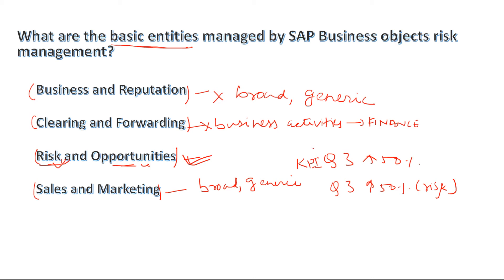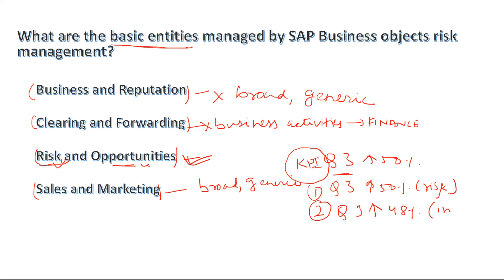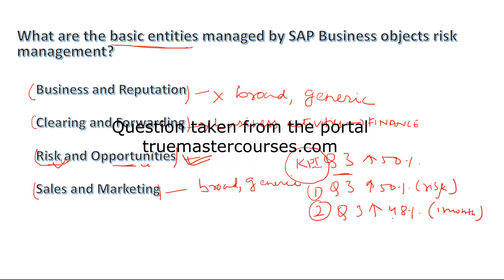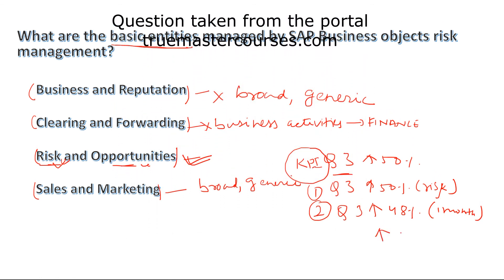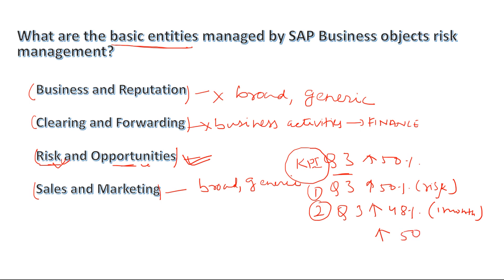Now for opportunities: using the same scenario with a 50% revenue increase KPI for quarter 3, suppose you're near the quarter's end and you've already achieved 48% with one month still to spare. At that point, you will try to exploit the opportunity and push revenue beyond 50%. That is classified as an opportunity. So the right answer is risk and opportunities.